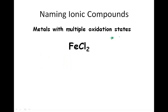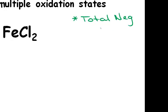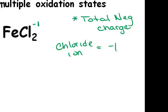We need to calculate the total negative charge. For FeCl2, a chloride ion has a charge of -1, and there are two chloride ions.